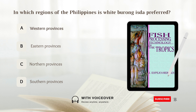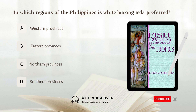A) Western provinces. White burong isda is preferred in the western provinces, while red burong isda is popular in the eastern provinces of the Central Luzon region of the Philippines.